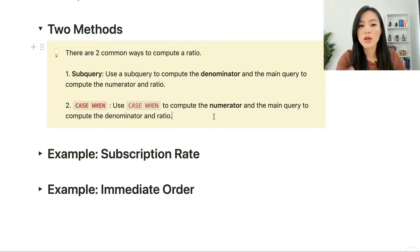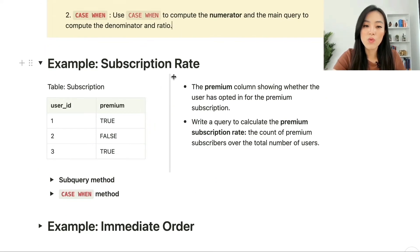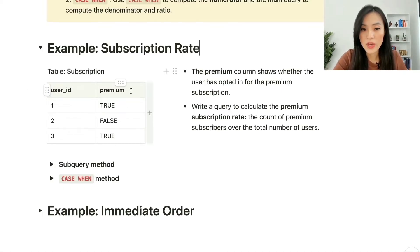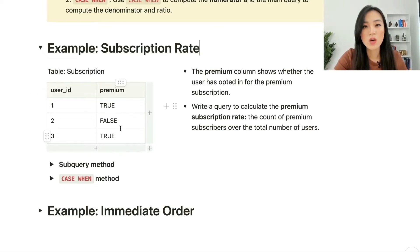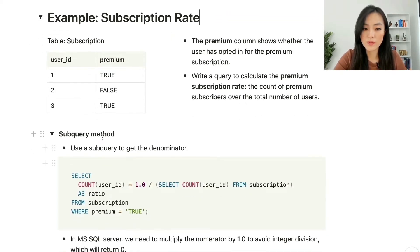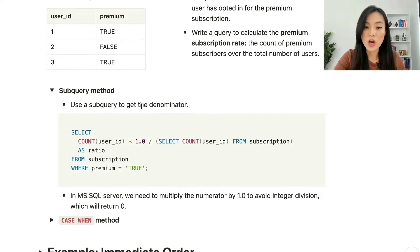The first example is a simple one: we want to get the subscription rate. Here's a table called 'subscription' with two columns — user_id and premium. The premium column shows whether the user has opted in for the premium subscription, so it only has values true or false. We want to write a query to calculate the premium subscription rate: the count of premium subscribers over the total number of users.